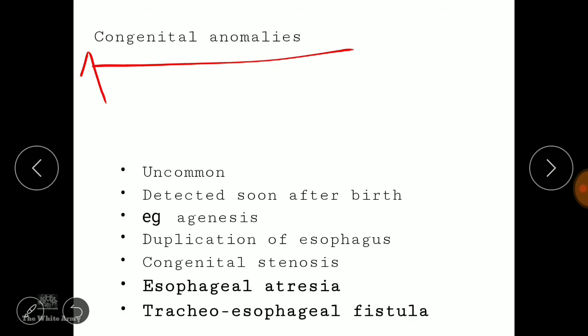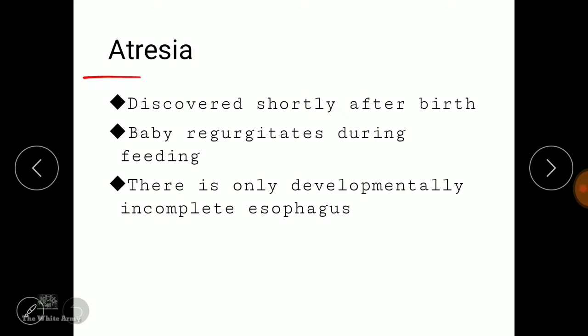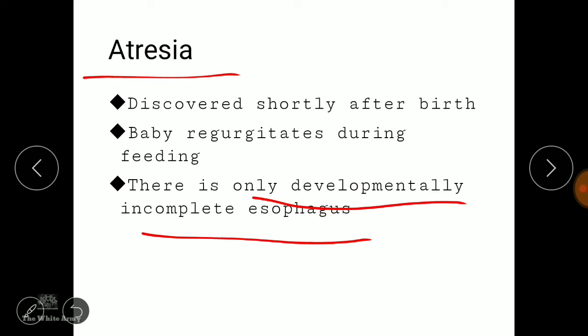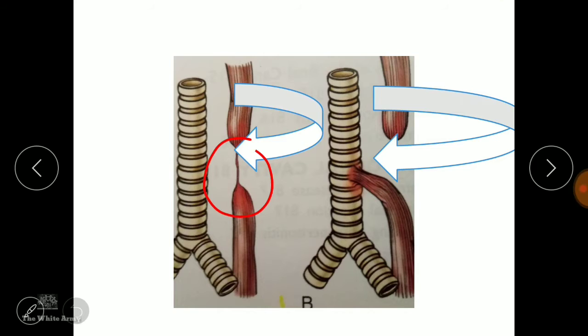We will first learn about congenital anomalies of the esophagus. These are uncommon, but if present, they are detected soon after feeding. Examples include agenesis, duplication of the esophagus, congenital stenosis, esophageal atresia, and tracheoesophageal fistula. Atresia refers to incomplete developmental formation of the esophagus, and it is discovered shortly after birth when the baby regurgitates upon feeding.